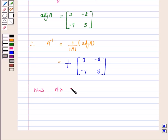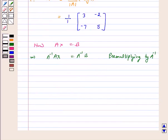AX is equal to B implies A inverse AX is equal to A inverse B, pre-multiplying both sides by A inverse. This implies IX is equal to A inverse B.